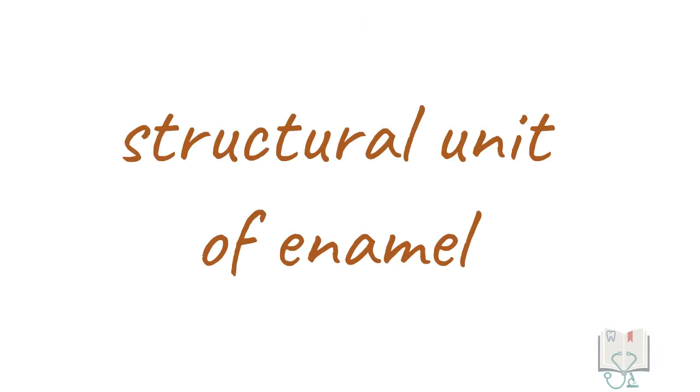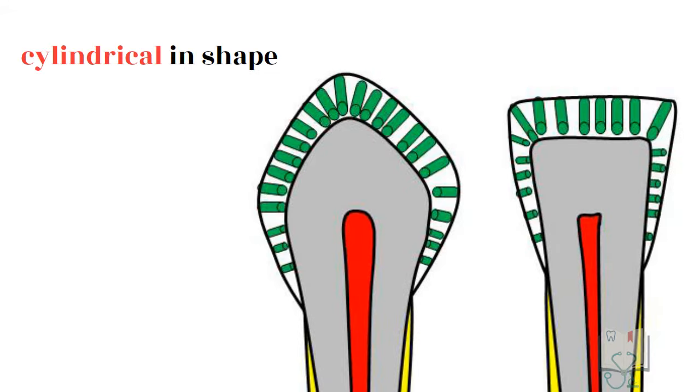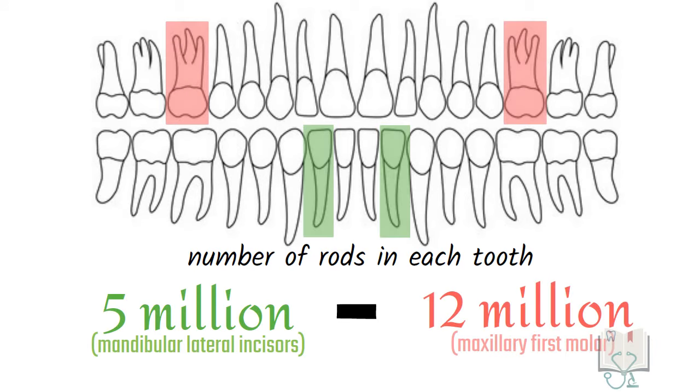The basic structural unit of enamel is the enamel rod or enamel prism. They are cylindrical in shape running from the dentino enamel junction to the enamel surface. Their number in each tooth is estimated to be around 5 million to 12 million.